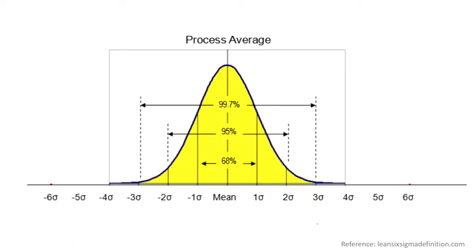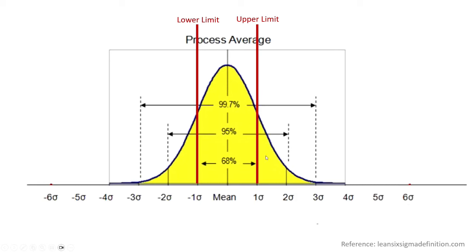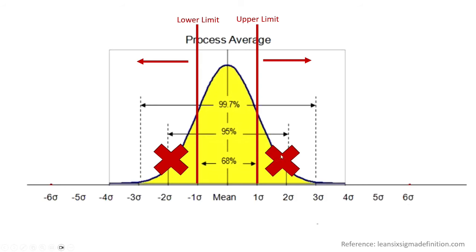Now let's say we have a product with specific lower and upper specification limits. Based on the data points in this graph, there's a lot of spread and variation in this process. Going past the lower limit and past the upper limit means we have a lot of product falling in what we consider the defect area. This process needs a lot of help and is considered a one sigma process, as only 68% of what is being produced is within specification and all the rest are defects — stuff you just can't sell because it's past customer requirements.